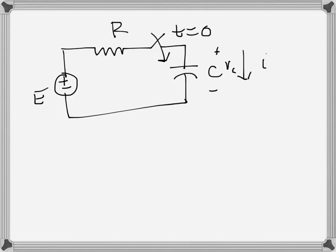This is a simple RC circuit and I want to find the transient response — the current i and the voltage across the capacitor Vc — when the switch is closed at t equals zero. Instead of writing the differential equation KVL equation, I will split the current into two parts.